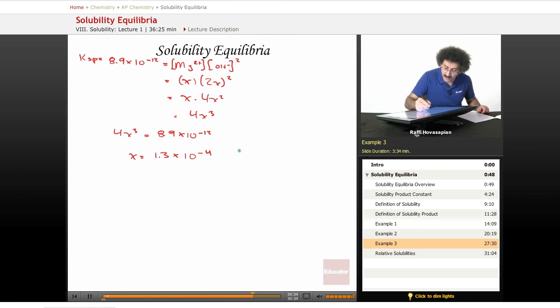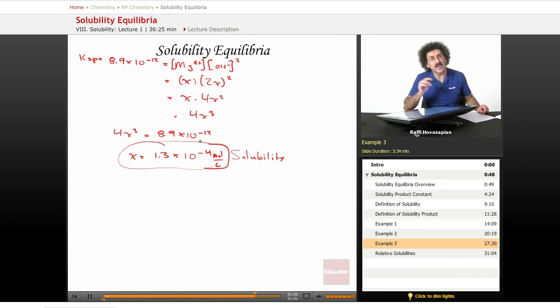This is our solubility right here. 1.3 times 10 to the negative 4. Solubility, we include the unit. So this is moles per liter, which means that in 1 liter of water, 1.3 times 10 to the negative 4 moles of magnesium hydroxide will dissolve.